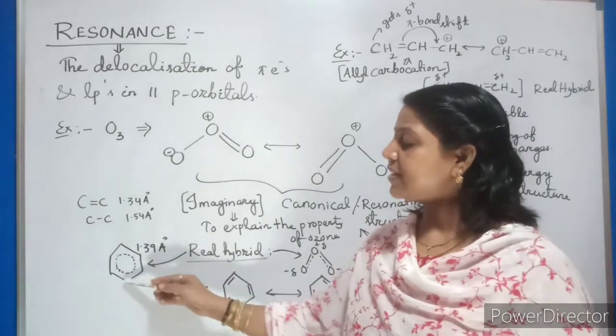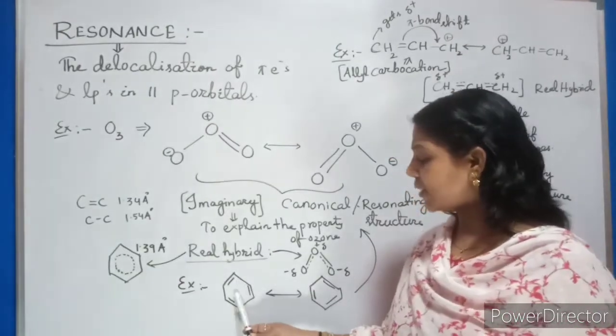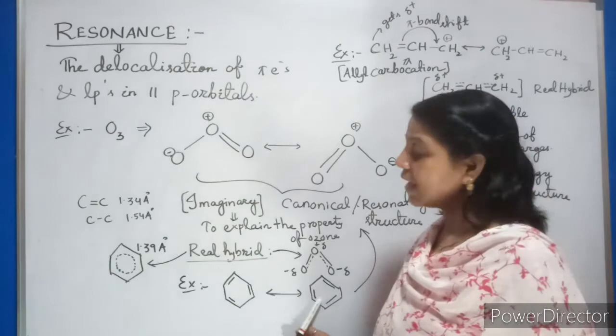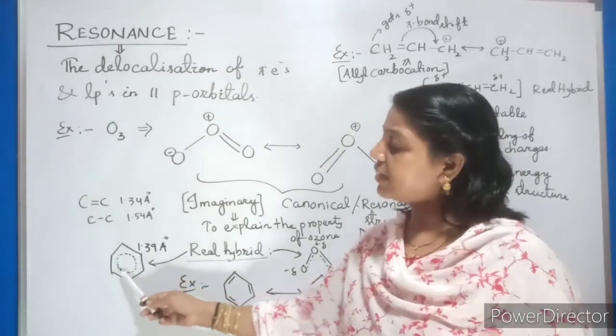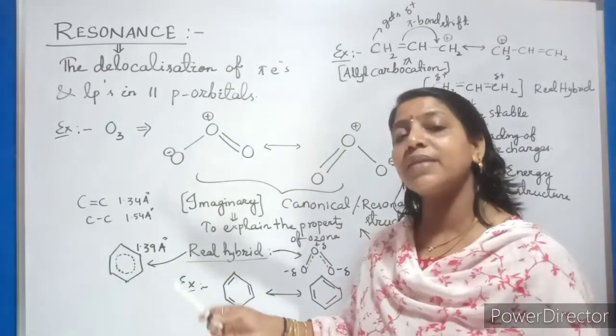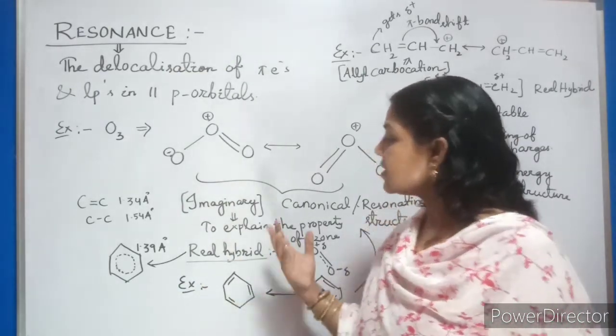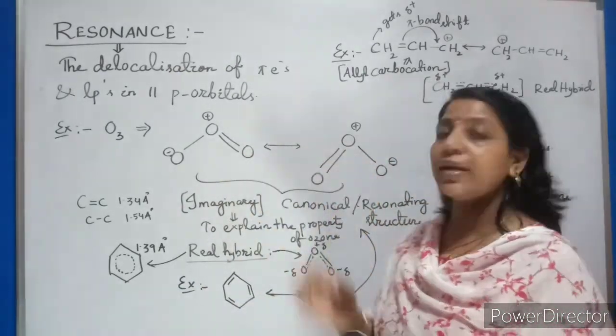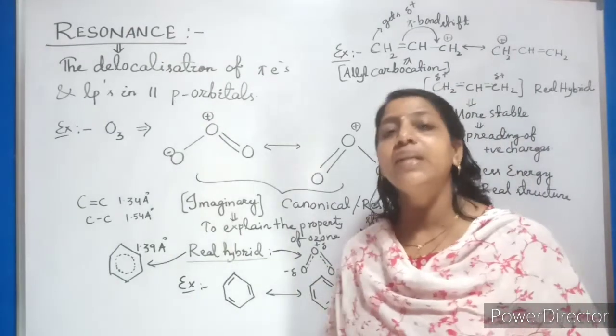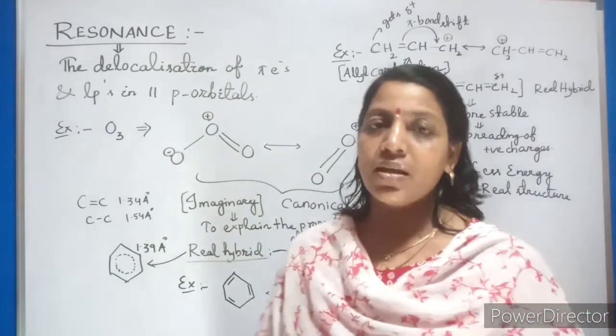How the way we are representing? Instead of representing in the terms of solid lines, we are representing it in terms of dotted lines because that bonds are equally distributed in that. Though imaginary or canonical way we are representing it just to explain the properties of that particular structure.